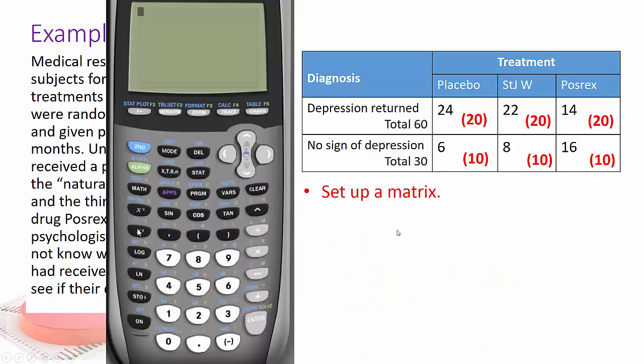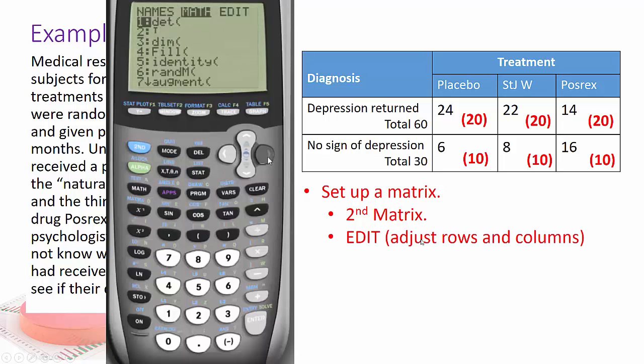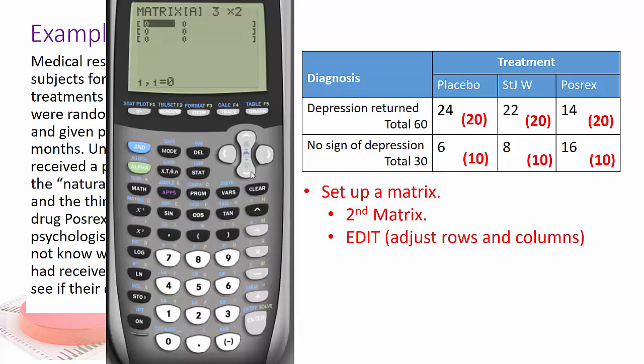So to do it on your calculator, you're going to set up a matrix. So let's go ahead. You press second matrix, which is right there, and then you go to edit. And you're going to adjust the rows and columns. Here I'm saying there are three rows and two columns, so it's a little flip for my matrix, but that's okay. So 24 and 6, 22 and 8, and then 14 and 16.